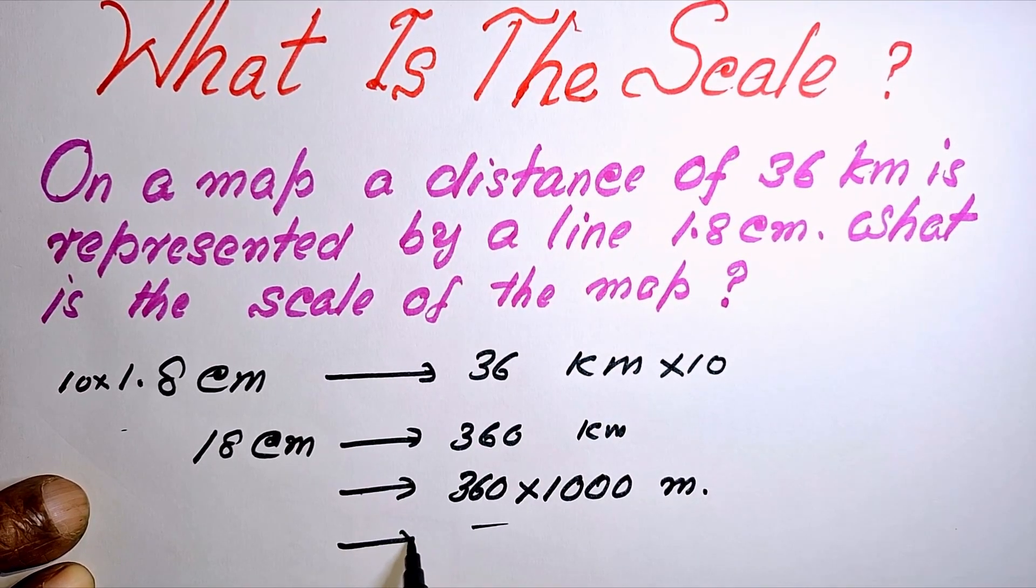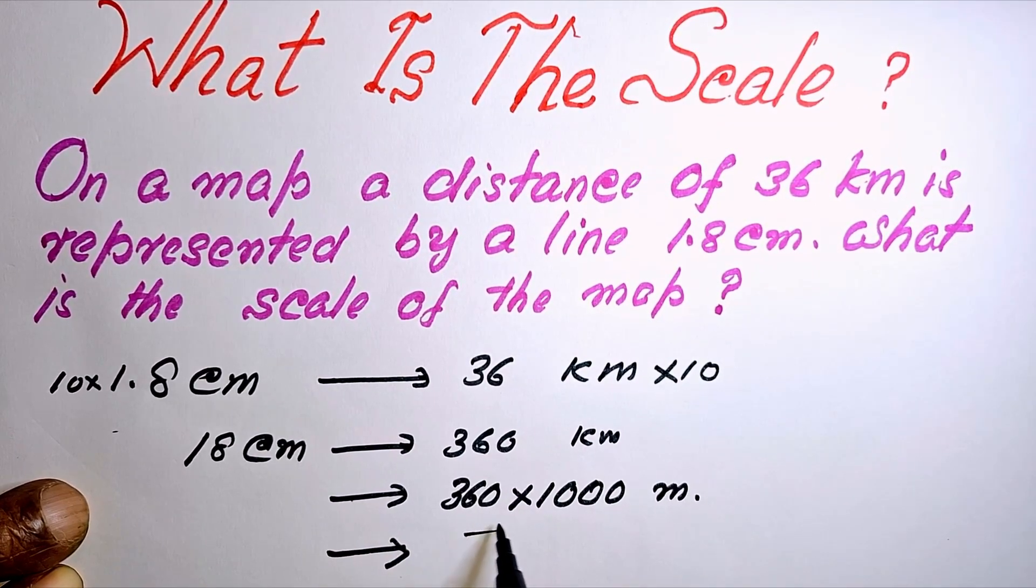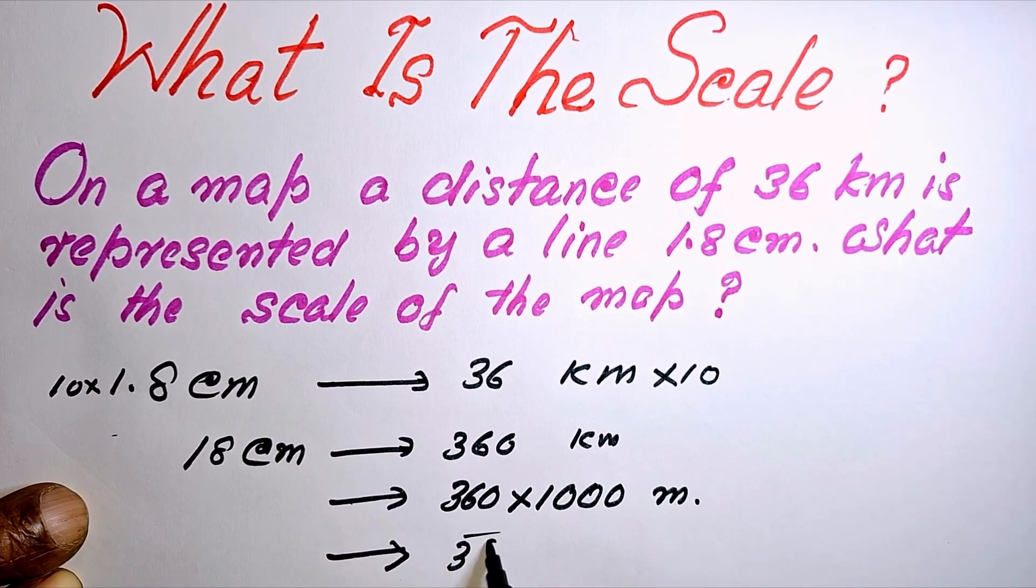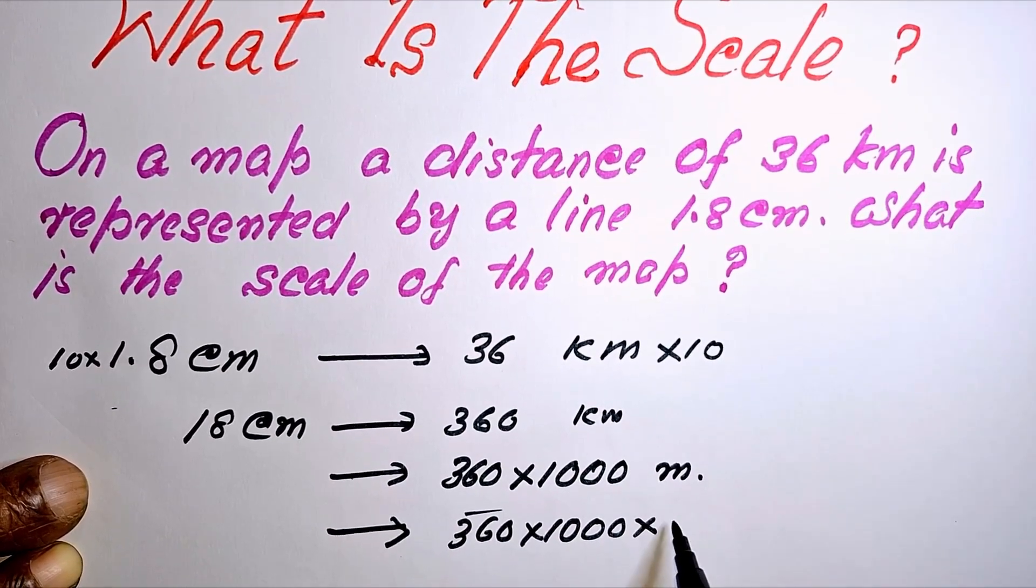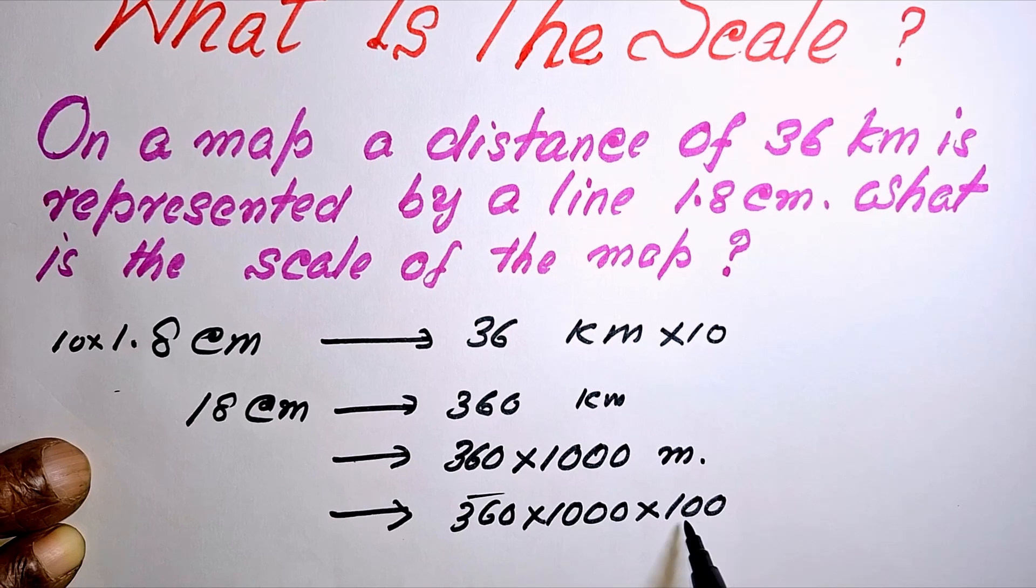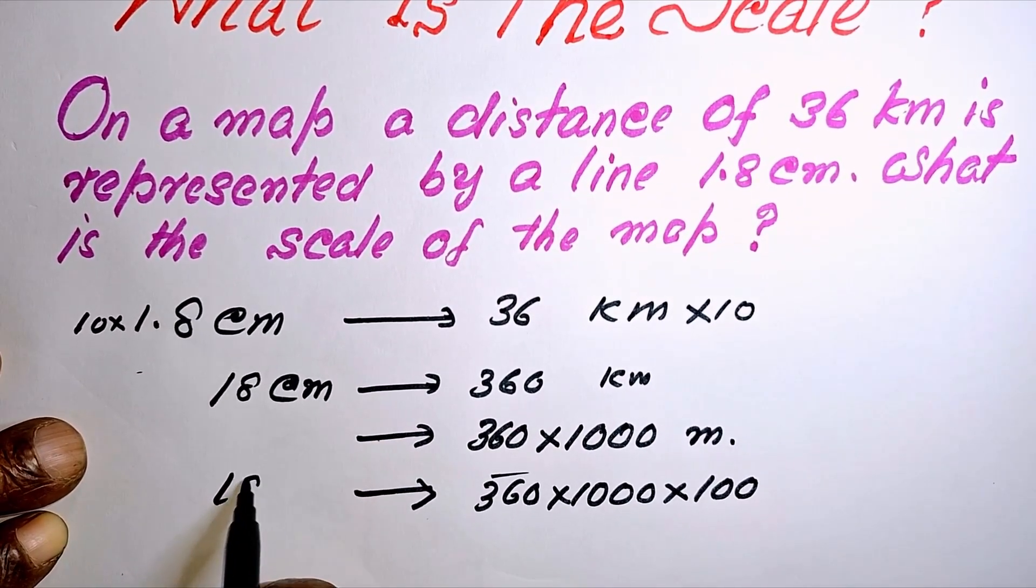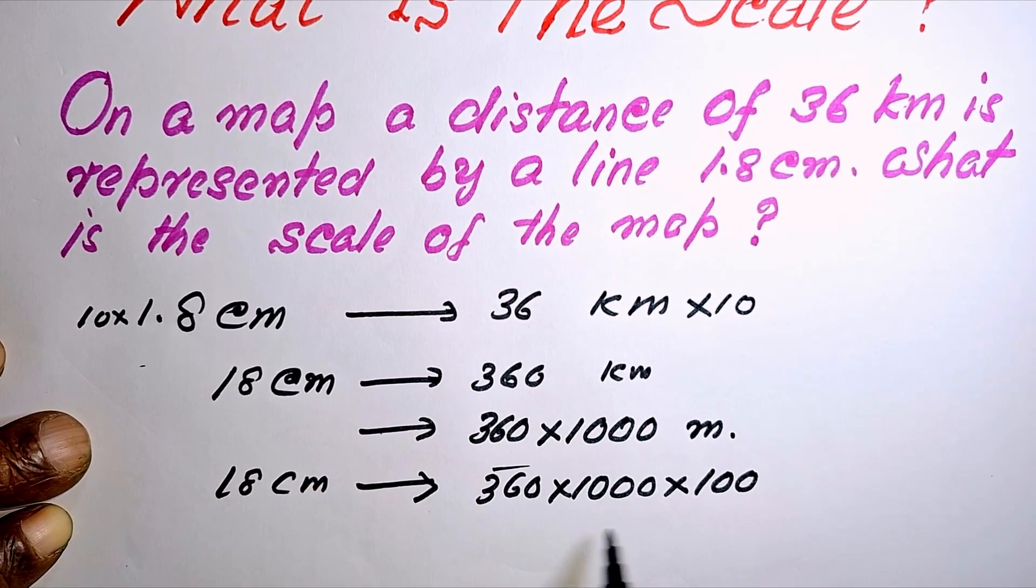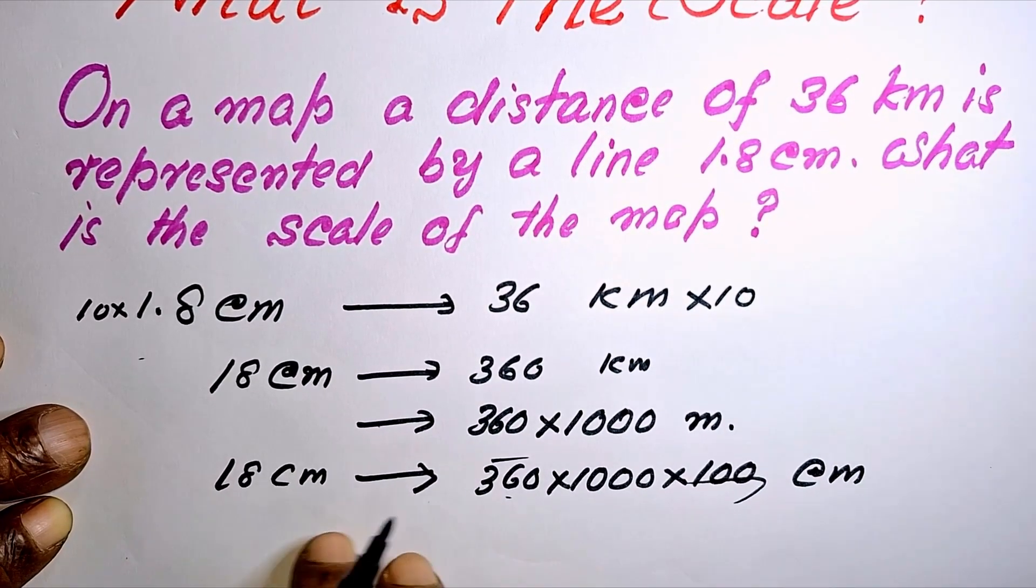So again, we can convert this to centimeters by multiplying by 100, because 100 centimeters is equal to one meter. So now 18 cm is equal to this much cm. Both sides are in the same units.